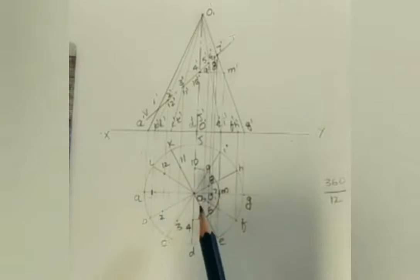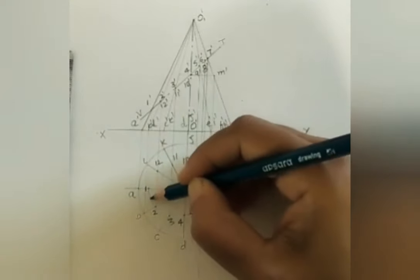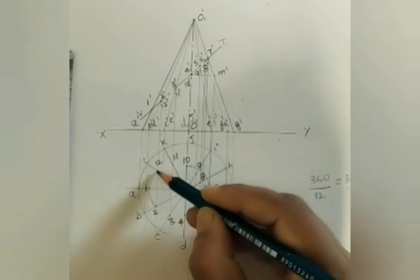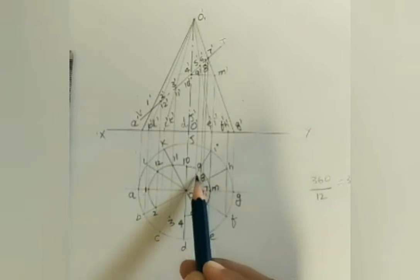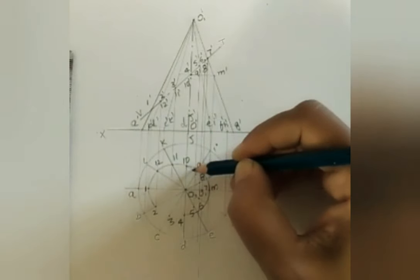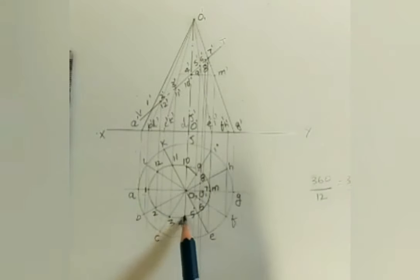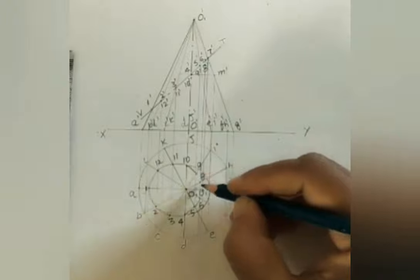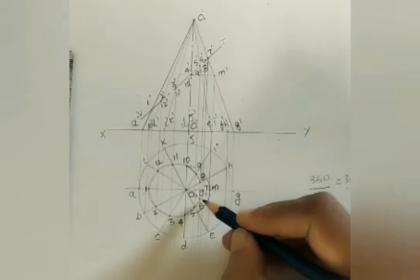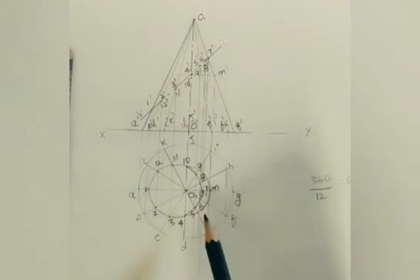After marking all the points — 1 through 12 — join all these points using a freehand curve to get the sectional top view of the section. Make the curve dark.